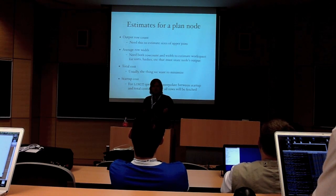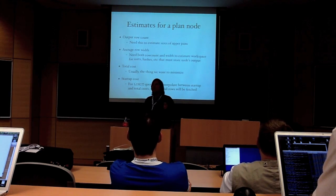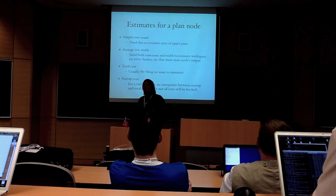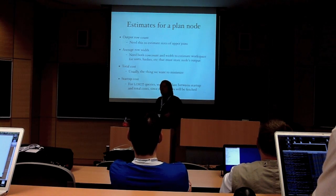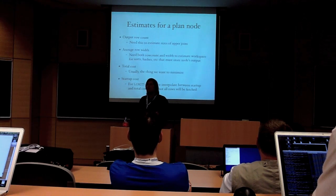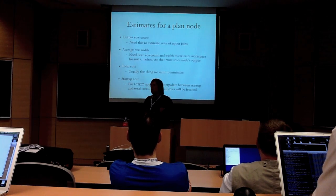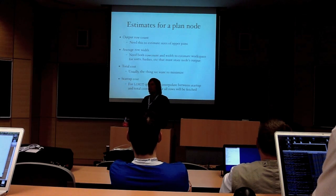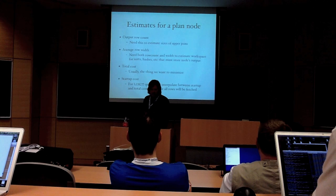But on the other hand, if there's a limit above this, then total cost isn't actually quite the right number because total cost to the planner means what would it cost to run this node to completion. And if there's a limit above it, we, in fact, are not going to run it to completion. And so what we want also is a startup cost so we can interpolate and figure out what the true cost of doing that is going to be.